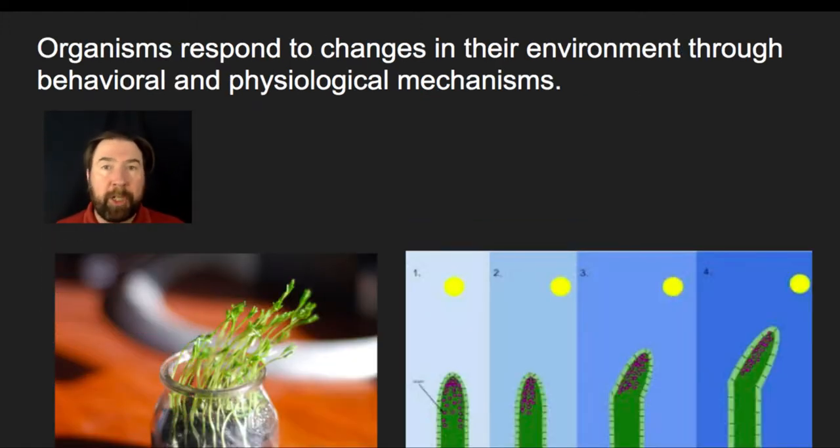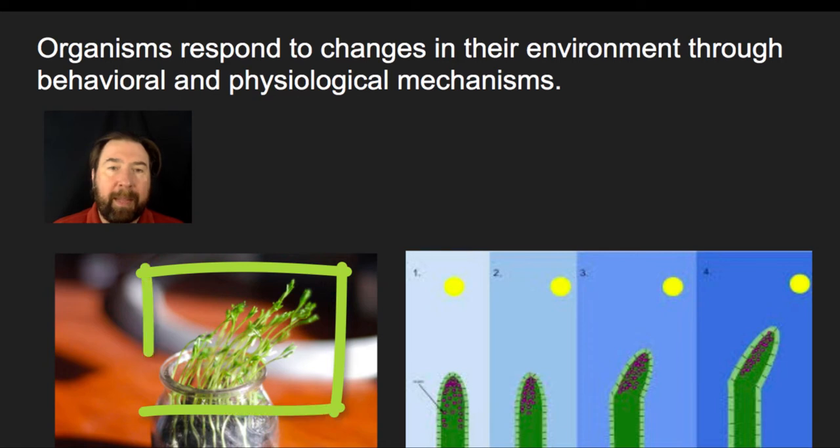Organisms respond to changes in their environment through behavioral or physiological mechanisms. One of the most obvious ones of this to me is the idea of what we call phototaxis by plants. You've probably seen this phenomenon that plants tend to open their leaves and grow those leaves towards the sun. In fact, there are multiple videos out there. If you go onto YouTube, you can actually watch plants change their shape and have their leaves track the sun throughout the day.